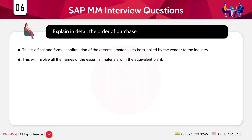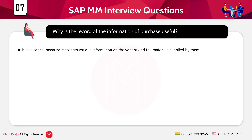The next question is: explain in detail the purchase order. A purchase order is a final, formal confirmation of the essential materials to be supplied by the vendor to the industry. It includes the names of essential materials with the equivalent plant. Purchase order details include the company code, vendor's name, delivery date of materials, and so on.